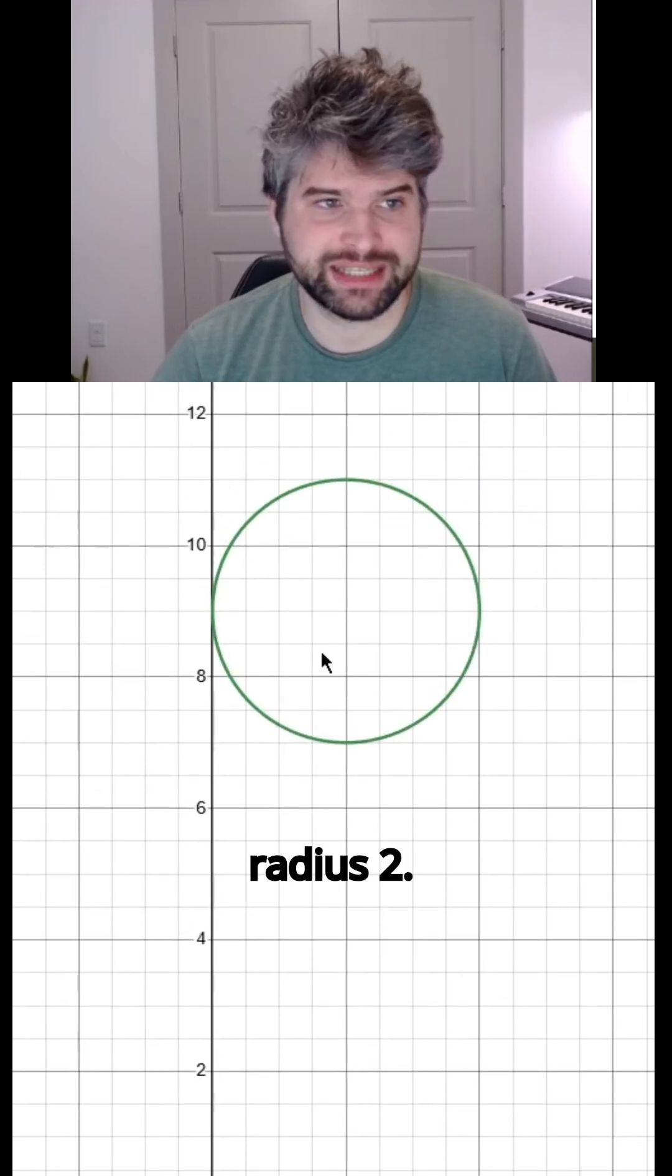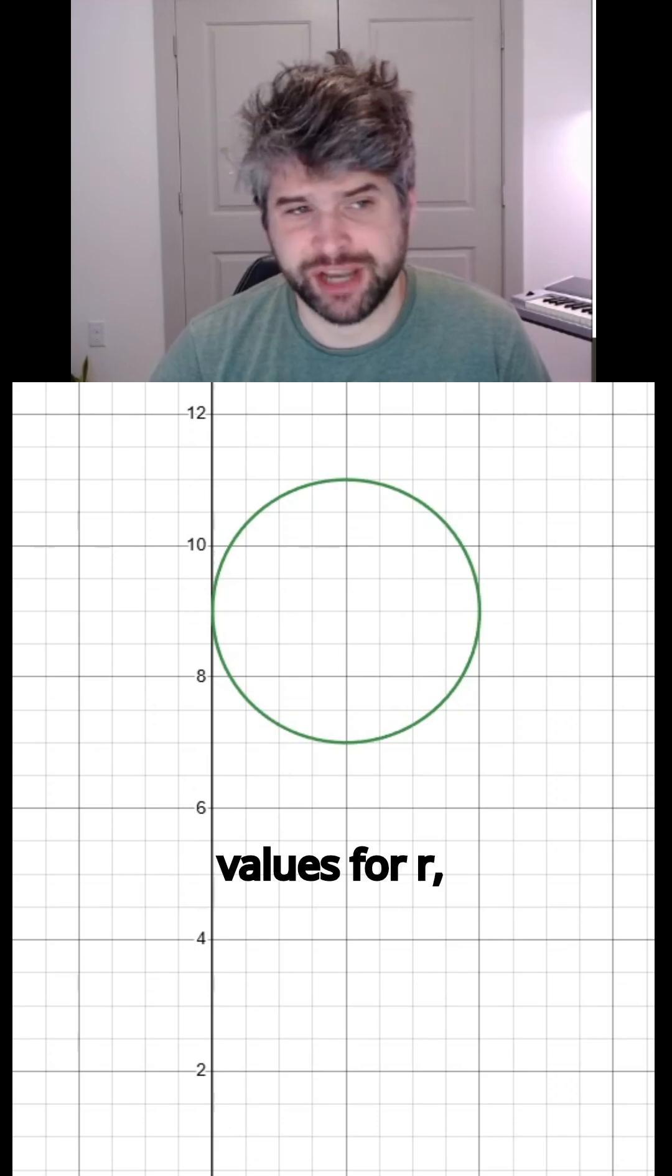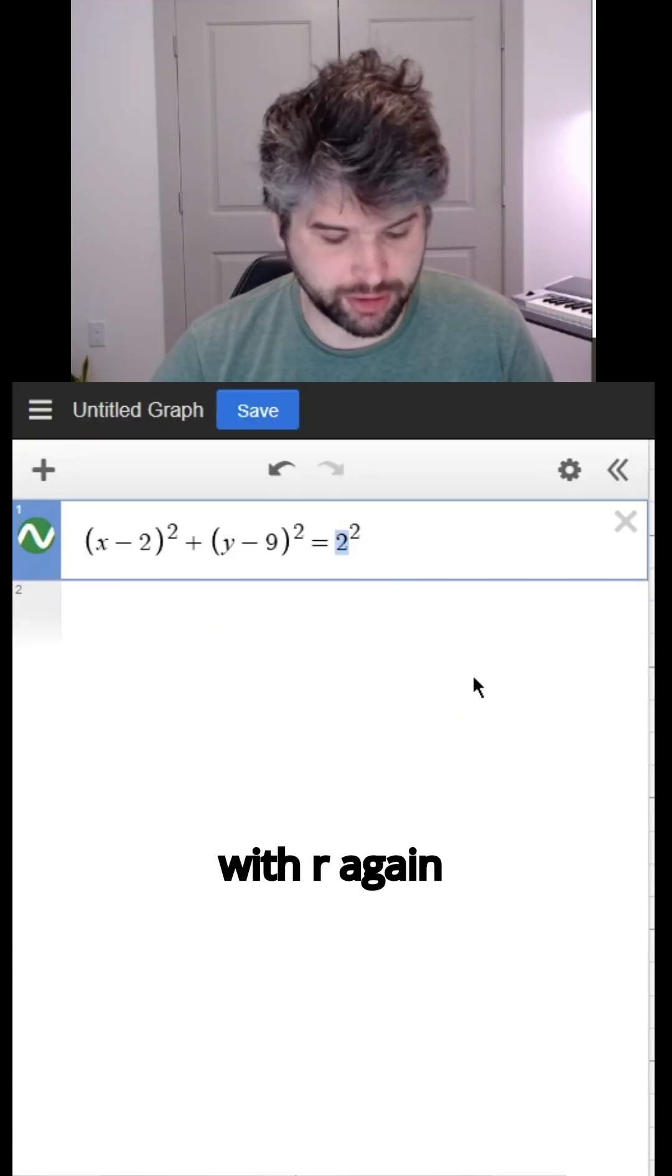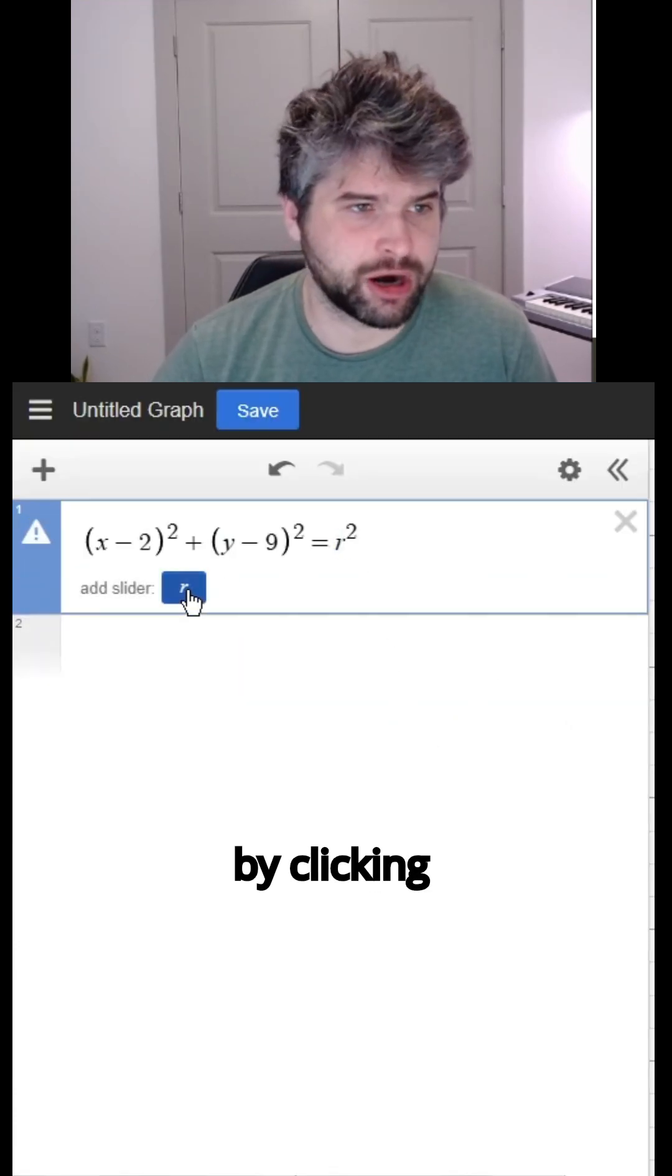Up here, we get a circle with a radius two, but we wanna try a bunch of different values for r. So let's replace it with r again and create a slider for r by clicking this button.